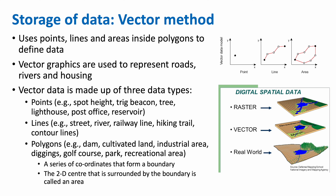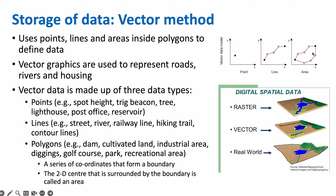Vector data is made up of three data types. First, points — examples include a spot height, a trig beacon, a tree, a lighthouse, a post office, or a reservoir. Second, lines — examples include a street, a river, a railway line, a hiking trail, or contour lines. Third, polygons — examples include a dam, cultivated land, an industrial area, diggings, a golf course, a park, or a recreational area. A polygon is a series of coordinates that form a boundary, and the 2D center surrounded by the boundary is called an area.